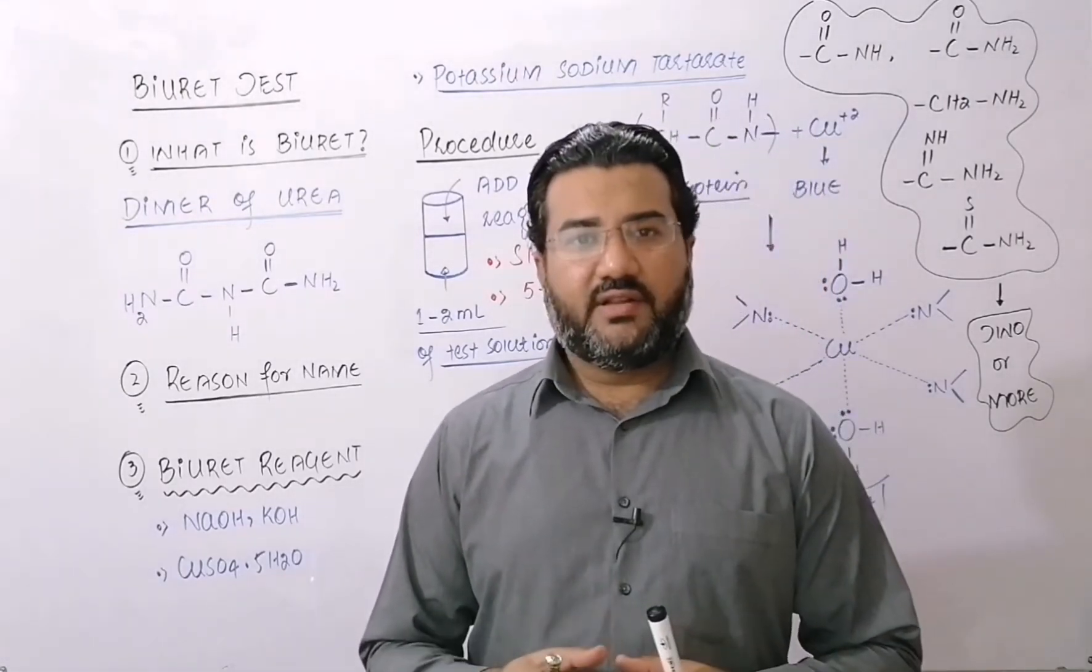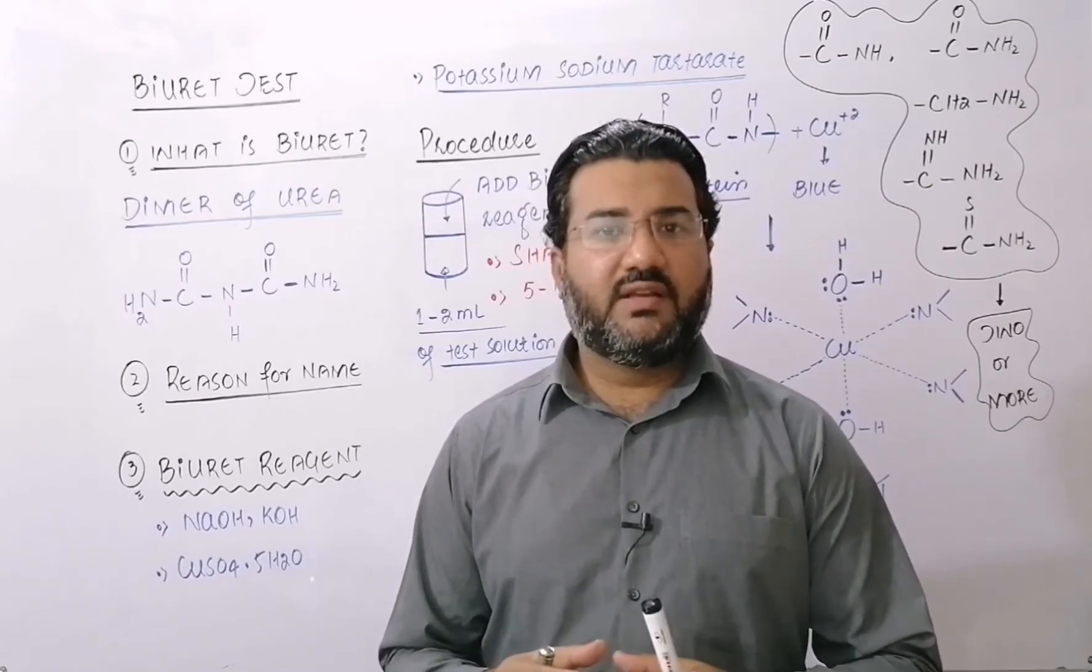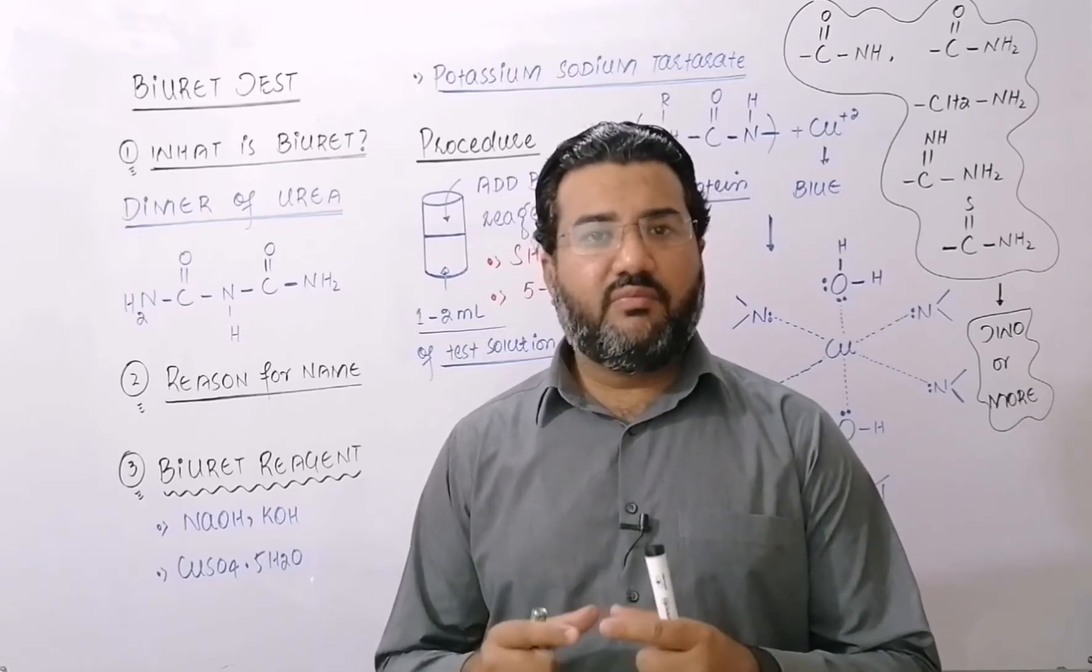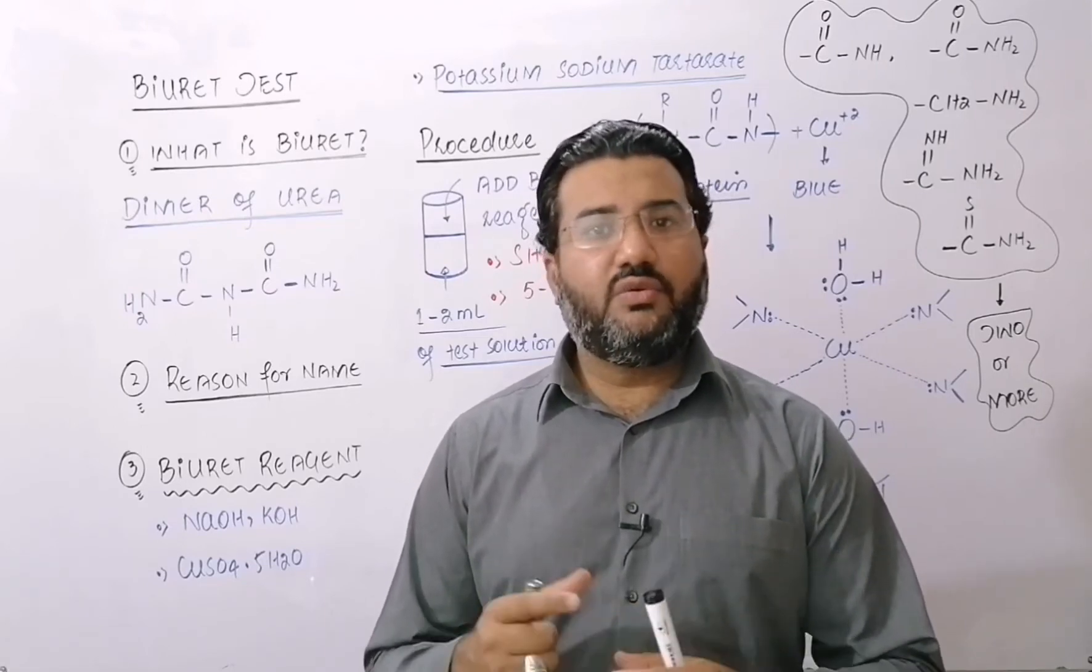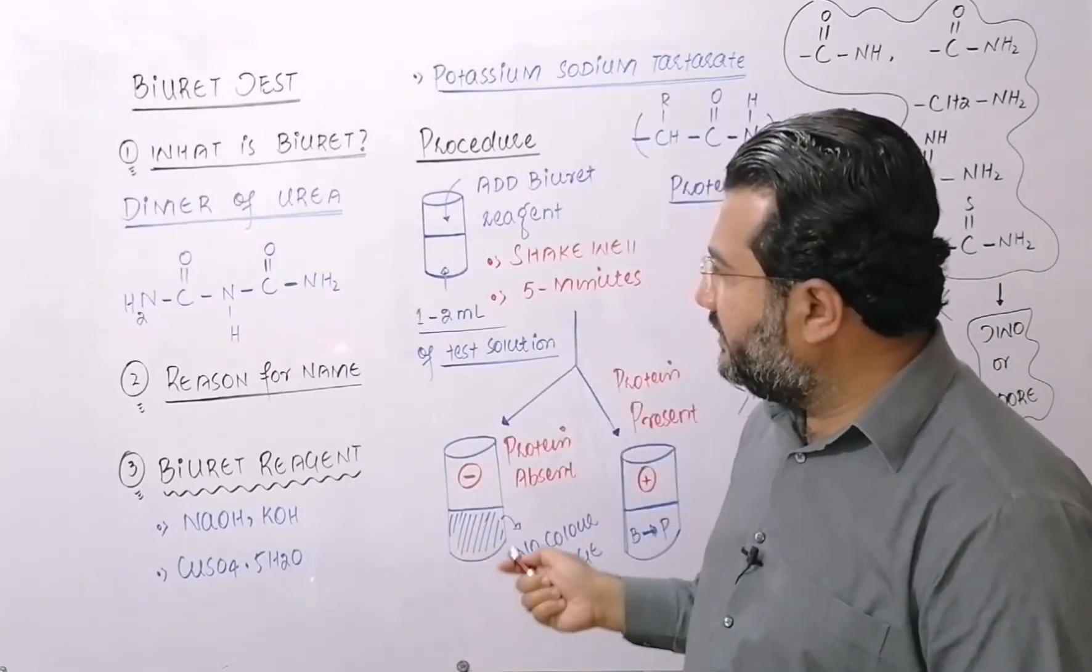What is biuret? The word bi means two and ureth is from urea. So biuret is basically a compound which is formed by the condensation of two urea molecules together. This one is the formula of the biuret.